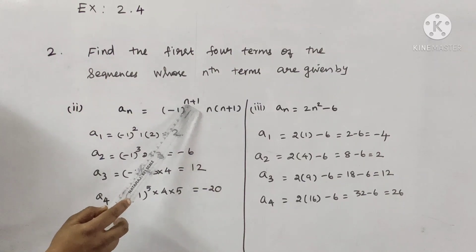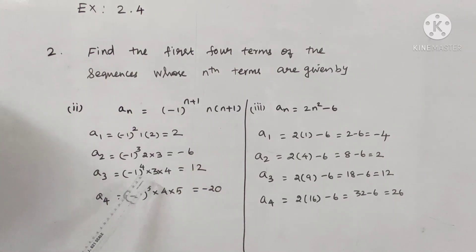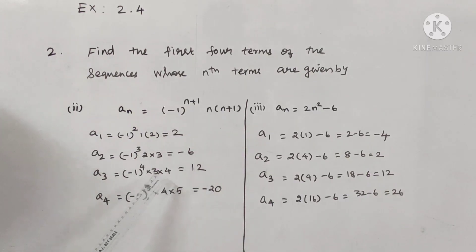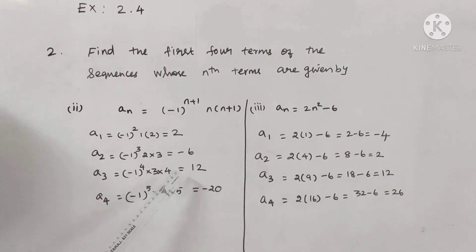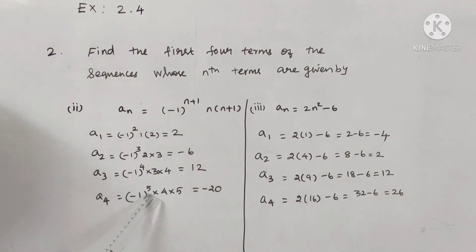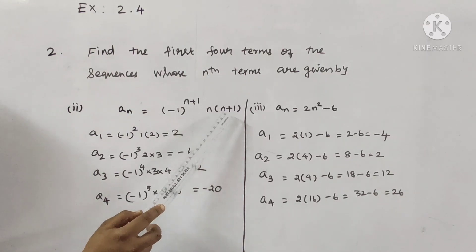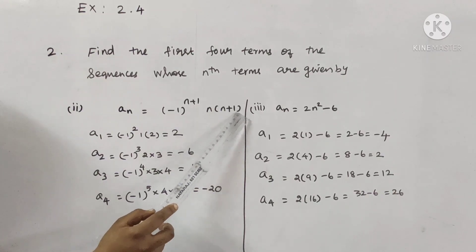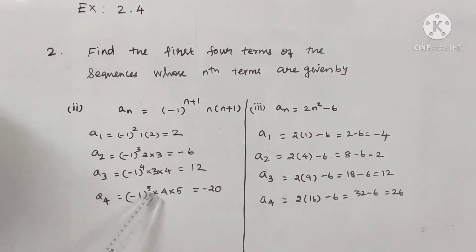For a3, n is 3: 3 plus 1 is 4, so (-1)^4 into 3 into 4. Since (-1)^4 is positive, 3 into 4 is 12, so a3 equals 12. For a4, n is 4: 4 plus 1 is 5, so (-1)^5 into 4 into 5 — minus 1 into 20 is minus 20.